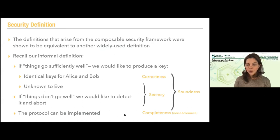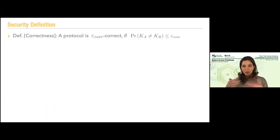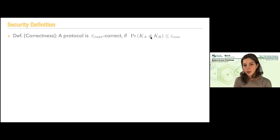Let's put it in equations. A protocol is ε-correct if the probability that Alice and Bob's keys are not the same at the end of the protocol is smaller than ε. You want this to happen with small probability.